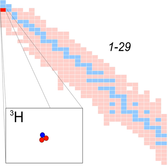Tritium has leaked from 48 of 65 nuclear sites in the U.S. In one case, leaking water contained 7.5 microcuries of tritium per liter, which is 375 times the EPA limit for drinking water.